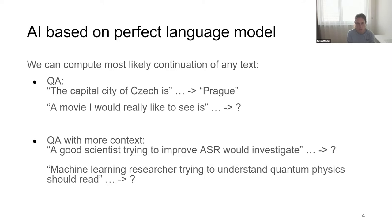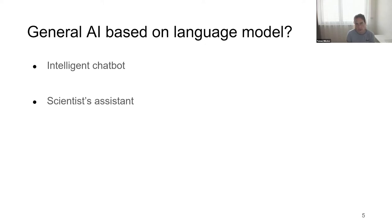Even more complex examples include generating what an amazing scientist would do to invent new approaches to language modeling — that's science fiction at the moment. But surprisingly, even models that exist today can generate plausible continuations of complex sentences. If we had really good language models, we could build intelligent chatbots that generate the most likely continuation of a conversation, or a scientist assistant trained on high-quality scientific data.